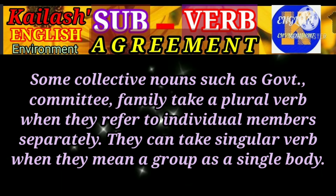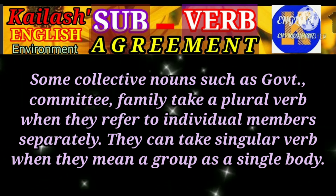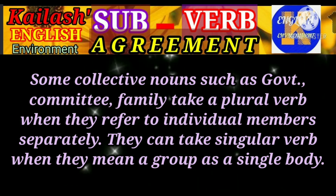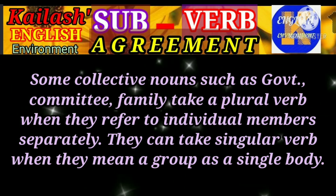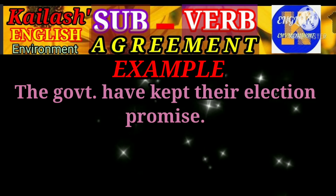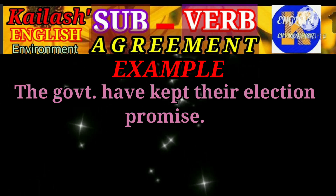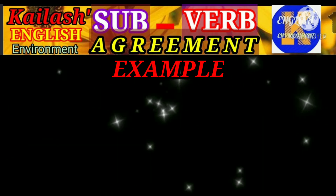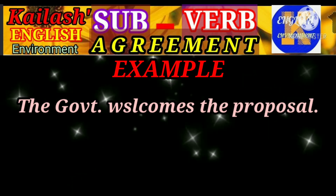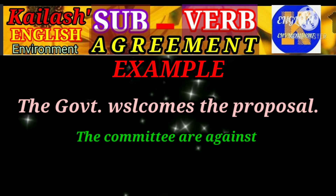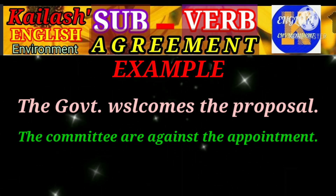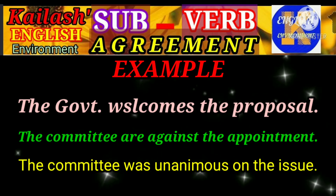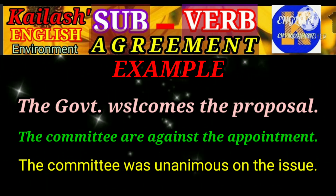Some collective nouns such as government, committee, and family take a plural verb when they refer to individual members separately. They can take a singular verb when they mean a group as a single body. For example, 'The government have kept their election promise' — here, government means individual ministers, so it takes a plural verb. 'The government welcomes the proposal' — it is a whole. 'The committee are against the appointment' — here, committee indicates individual members. But 'The committee was unanimous on this issue' — the committee is regarded as a single body.